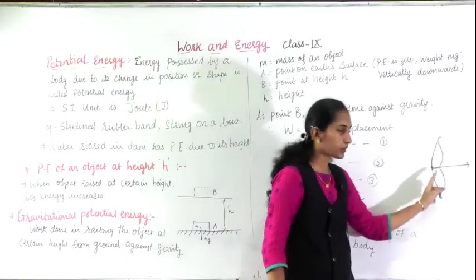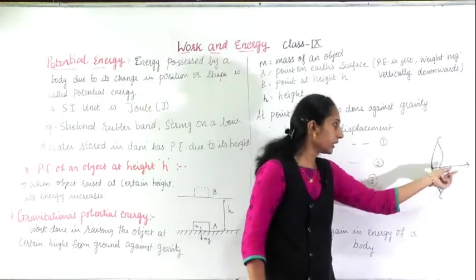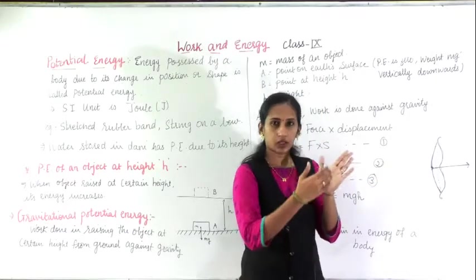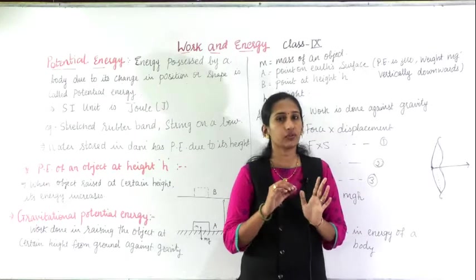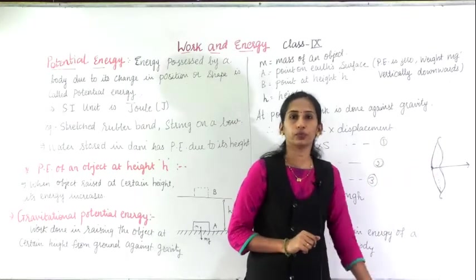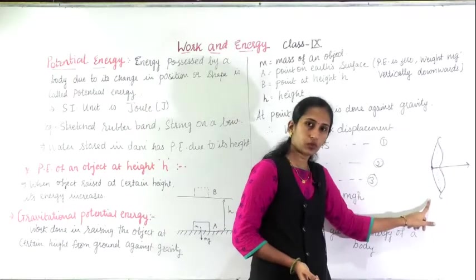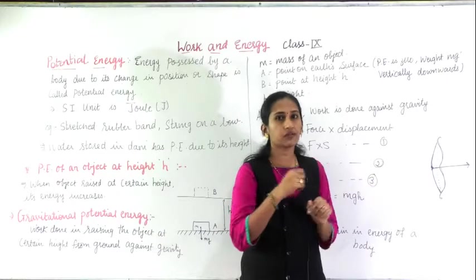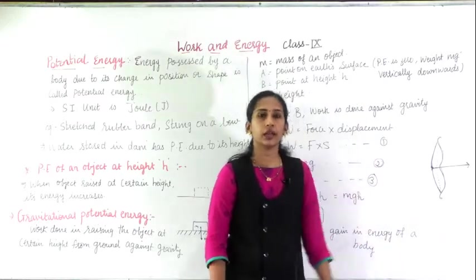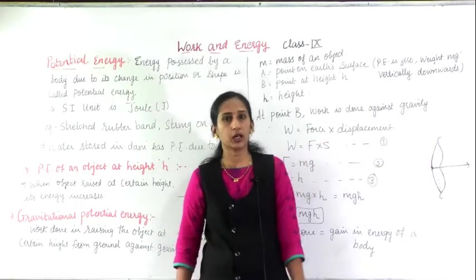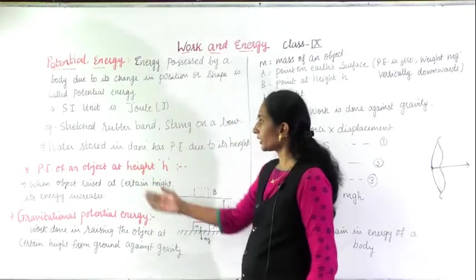Now your example: stretched rubber band — just now I showed you. String on the bow — this is a bow at normal condition, this dotted line I have shown, without stretch. But when I am putting an arrow on this bow, you can see the string stretches. Now this bow and string has energy. If I leave the string, the arrow will move. There is a change in position and change in shape of the string, and it has gained some energy when stretched. When I leave it, the arrow moves forward due to that energy. So at this condition, the bow and arrow has potential energy.